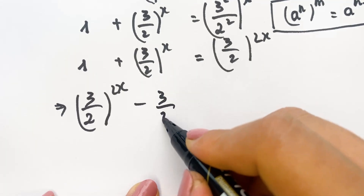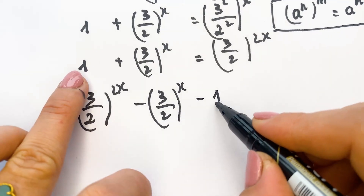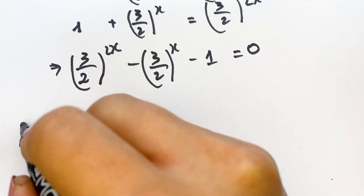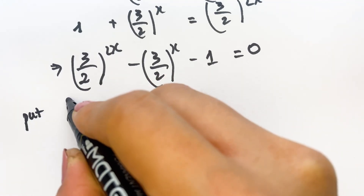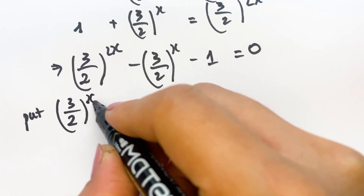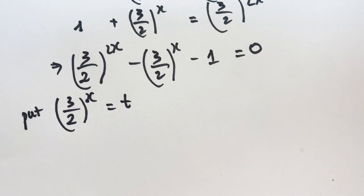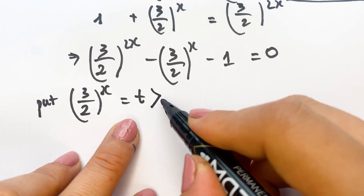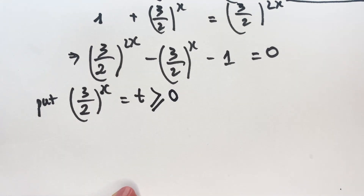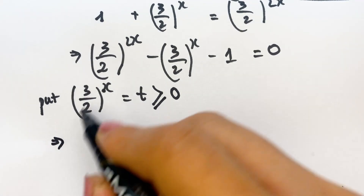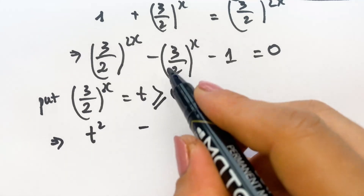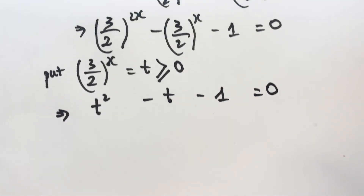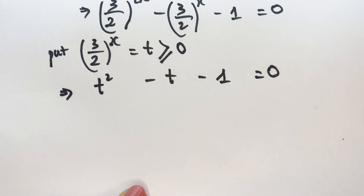So we need to subtract (3 over 2) whole power x and minus 1, giving us: (3 over 2) power 2x minus (3 over 2) power x minus 1 equals 0. You need to put (3 over 2) whole power x equal to t, where t must be greater than 0. So you can see t squared minus t minus 1 equals 0. It's a quadratic equation.